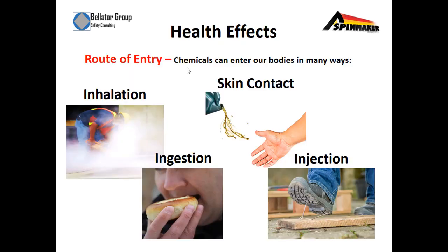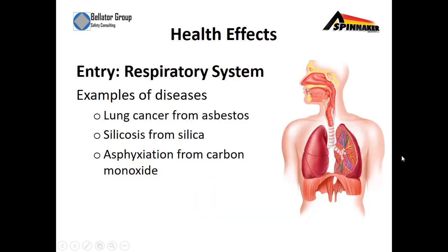The routes of entry. Chemicals can enter our bodies in many ways — whether it's through inhalation, ingestion, skin contact, or injection. Entry into the respiratory system: examples of diseases include lung cancer from asbestos, silicosis from silica dust, and asphyxiation from carbon monoxide poisoning.